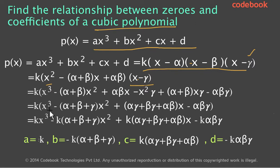Simplifying the expansion, we have x³. Observing the x² terms: there are two of them — one from the first group and one from the γ multiplication — so combining gives -(α + β + γ)x². For the x terms, we have αβx and (α + β)γx, which combine to give (αβ + αγ + βγ)x. The constant term is -αβγ.